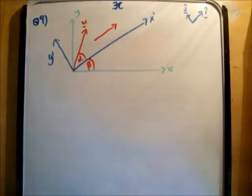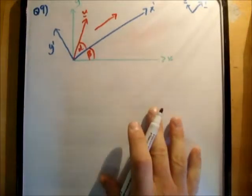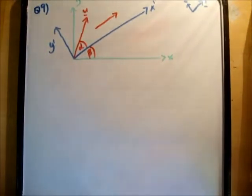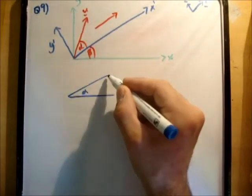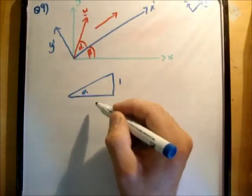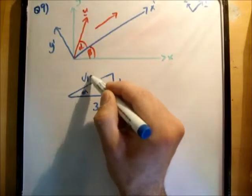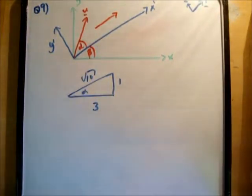Alright, so the first thing we need to do of course is resolve our vector and we've done this a million times. So let's pick this up a bit. So we're given that alpha is tan inverse of one third. So this is root 10. So for alpha the cosine is 3 over root 10 and the sine is 1 over root 10.